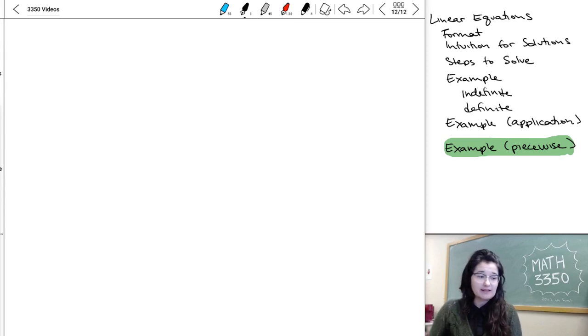And our last example for this section is going to be a piecewise linear problem. So students tend to have a lot of trouble with this. So I'd really like you all to pay attention and make sure you take in all the details here.